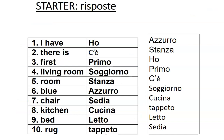Ecco, ci sono delle risposte. Numero uno: I have — in italiano, ho. Numero due: c'è. Numero tre: primo. Quattro: soggiorno. Cinque: stanza. Sei: azzurro. Sette: sedia. Otto: cucina. Nove: letto. E numero dieci: tappeto. Finito.